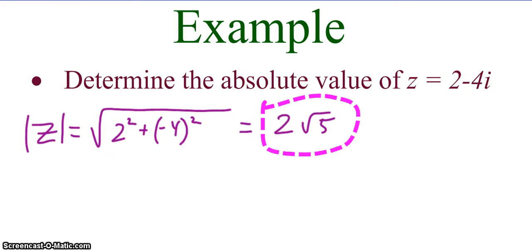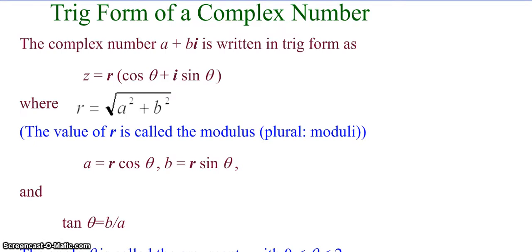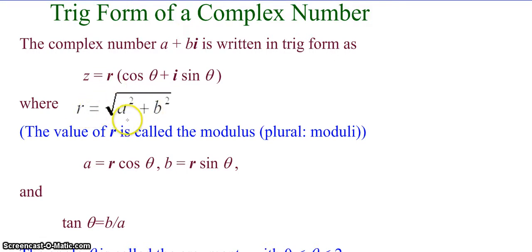Moving on to the trig form of a complex number. A complex number a plus bi can be written in trig form as r times the quantity cosine theta plus i sine theta, where r is the absolute value of the complex number — the square root of a squared plus b squared. Here, a equals r cosine theta and b equals r sine theta. This is the exact same thing as the trig form of a vector, but now we're doing it with a complex number. The value r is called the modulus.